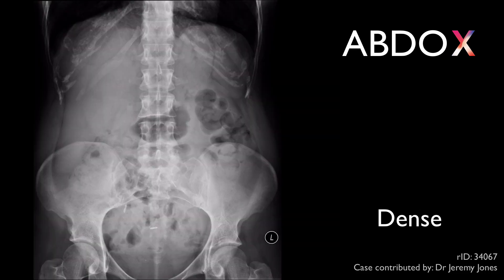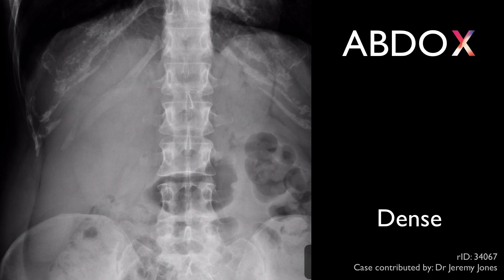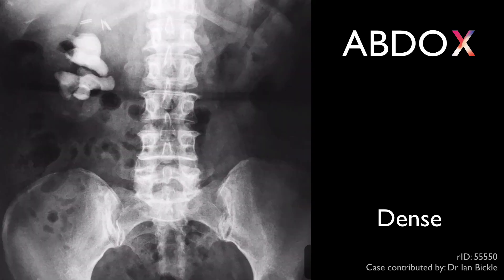D is for dense structures, bones, and areas of calcification. On every abdominal radiograph, examine the pelvic bones, the vertebrae, and the ribs. The costal cartilages often have an odd appearance due to the way they calcify. Renal stones, such as this staghorn calculus in the right kidney, may be seen.